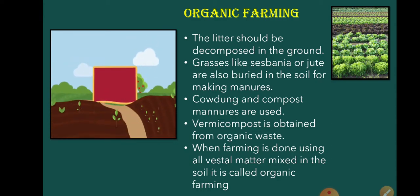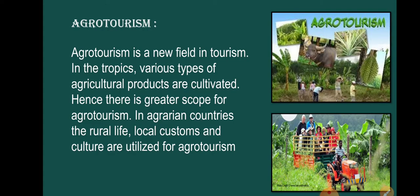Now let's see the last topic, which is called agrotourism. Agrotourism is a new field in tourism. In tropical regions, various types of agricultural products are cultivated, hence there is greater scope for agrotourism. In agrarian countries, the rural life, local customs and culture are utilized for agrotourism. City dwellers are curious about the farmer's life and environment, and many of them visit these places. This is called agrotourism, and it is also a way of earning money.